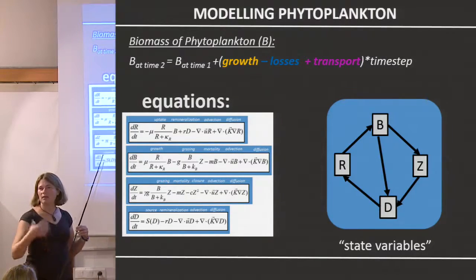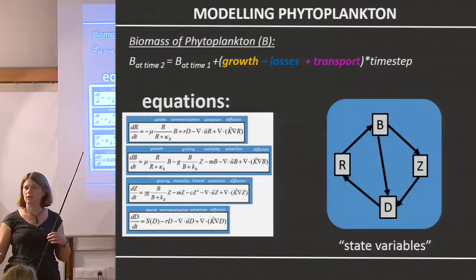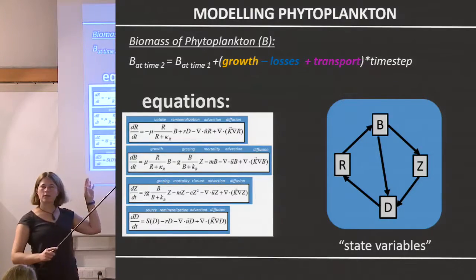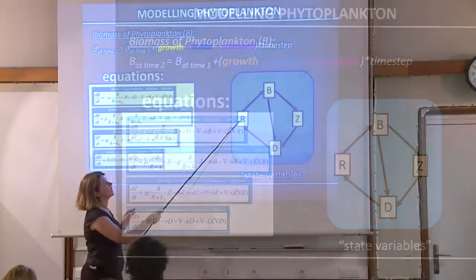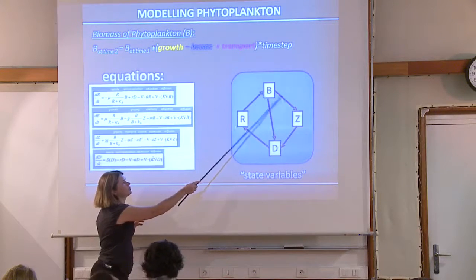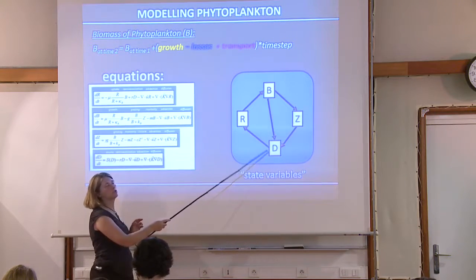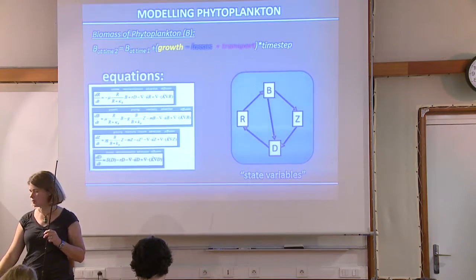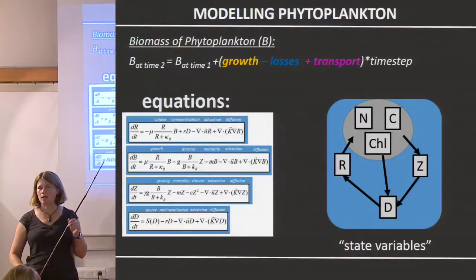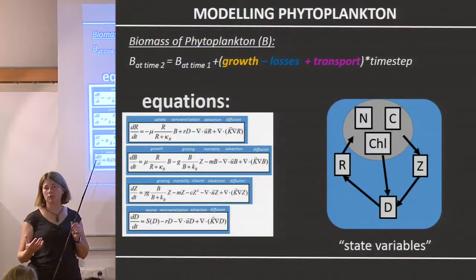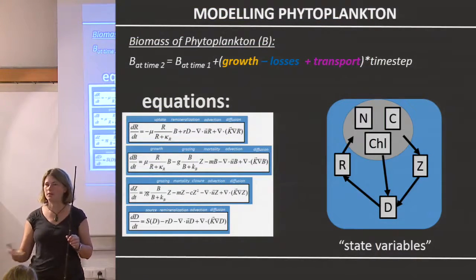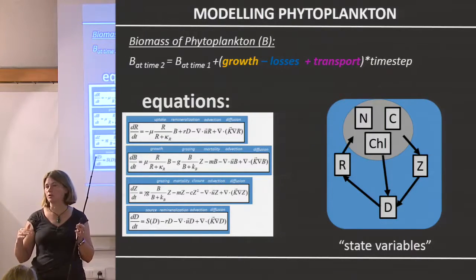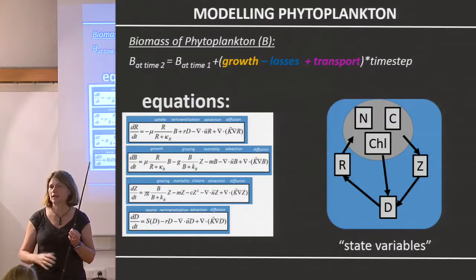There's a grazing term — all the things that eat the phytoplankton — and some detritus: dissolved organic matter, particulate organic matter. Pictorially, we're looking at nutrients being eaten by phytoplankton, those being eaten by zooplankton, and detritus. In the models, biomass is usually represented as carbon because most biogeochemical models really care about carbon — they get funded by saying they'll see where carbon goes in the ocean, what the export is.